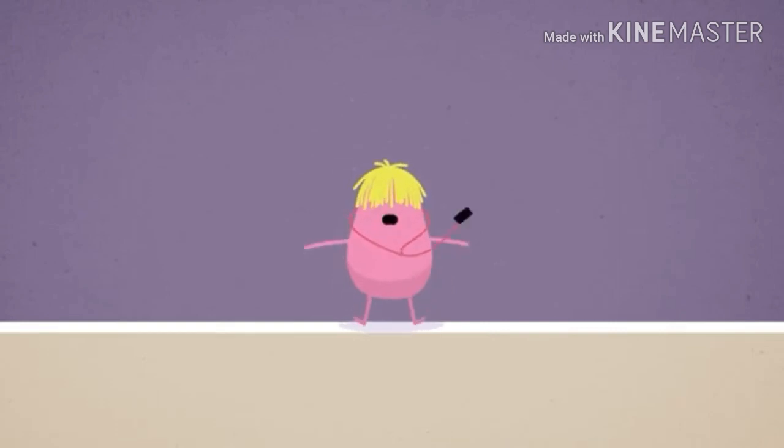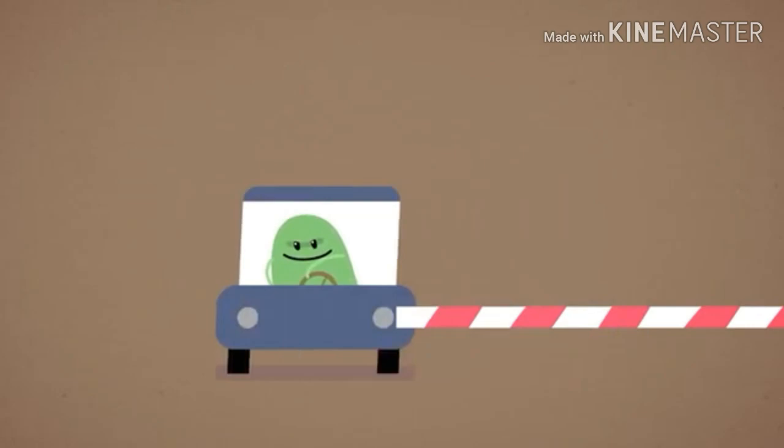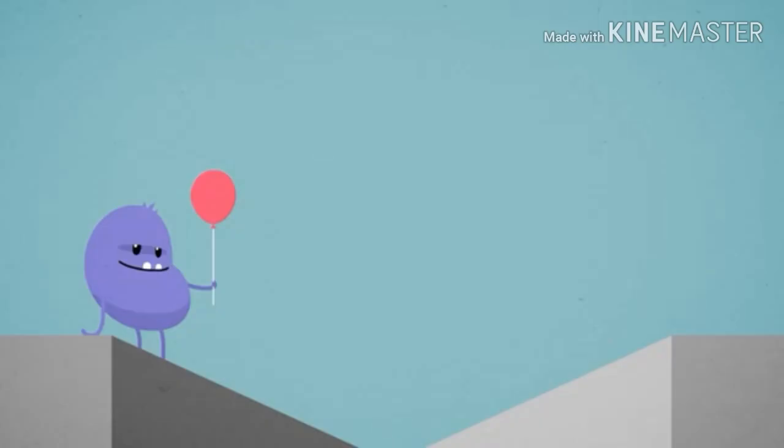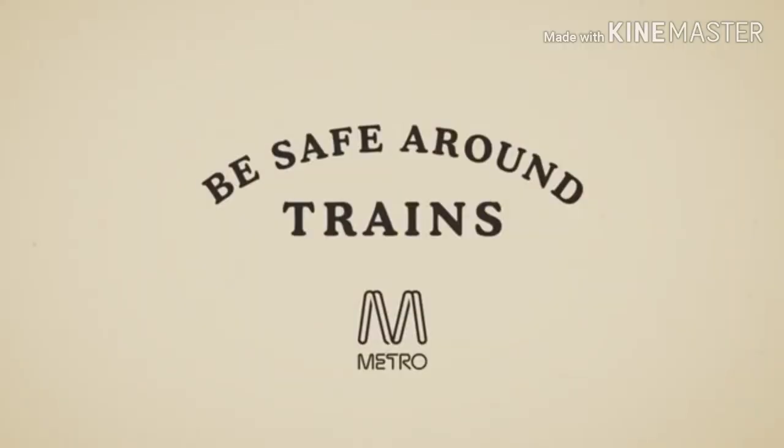Stand on the edge of the train station platform, drive around the boom gates at a level crossing, run across the tracks between the platforms. Message from Metro.